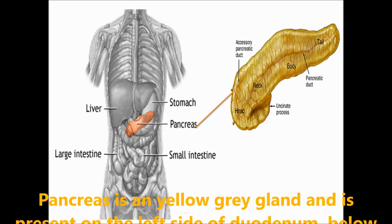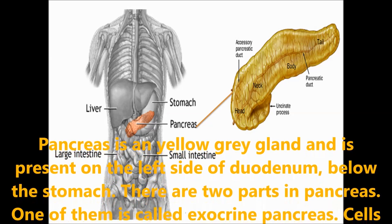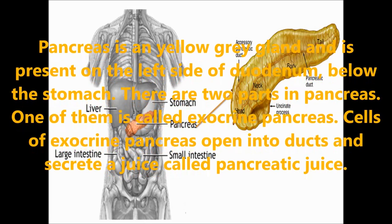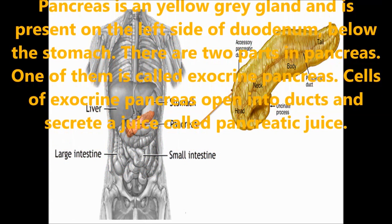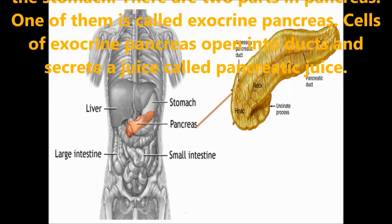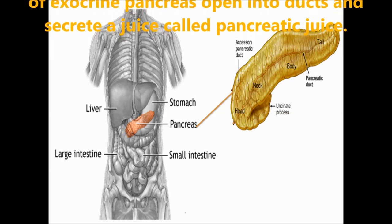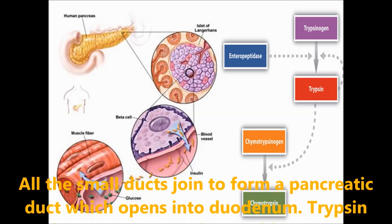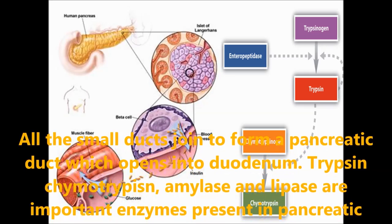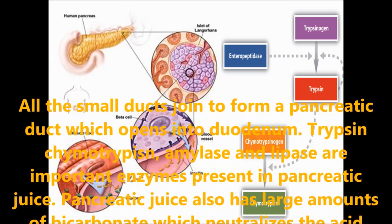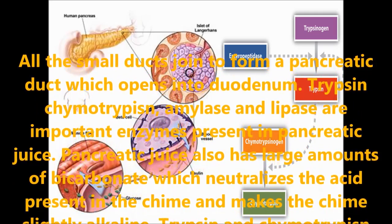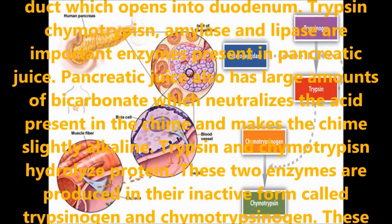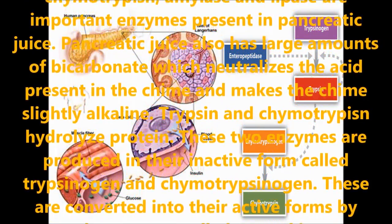Pancreas is a yellowish-gray gland present on the left side of the duodenum below the stomach. There are two parts in the pancreas. The exocrine pancreas cells open into ducts and secrete a juice called pancreatic juice; all small ducts join to form a pancreatic duct which opens into the duodenum. The important enzymes present in pancreatic juice are trypsin, chymotrypsin, amylase and lipase. The pancreatic juice also contains a large amount of bicarbonate, which neutralizes the acid in the chyme and makes it slightly alkaline.